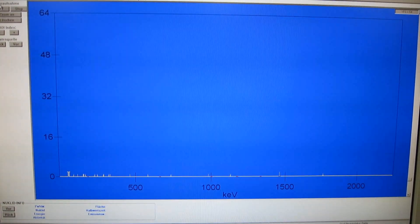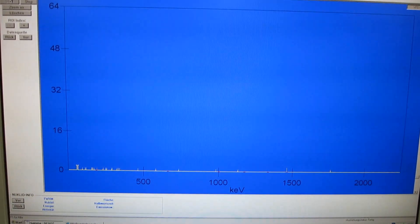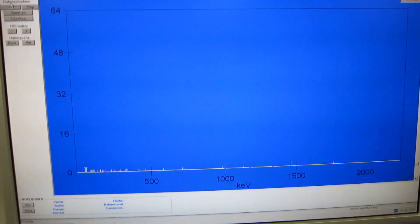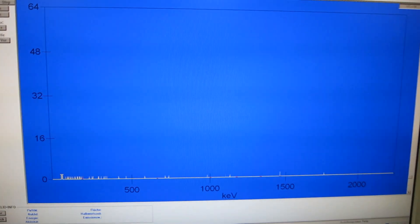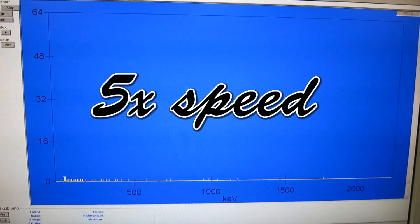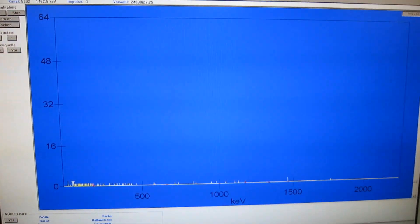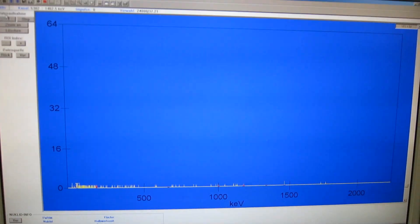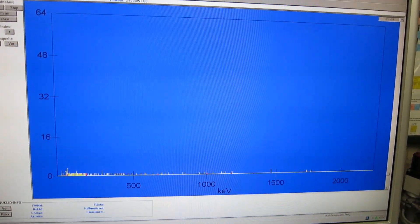This is the gamma spectrum of that apple sample, and you can see that we don't really see much as of yet, no significant cesium peaks or anything. But of course we're just measuring for a few seconds now, so let's take a look at that spectrum after 24 hours.